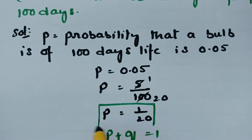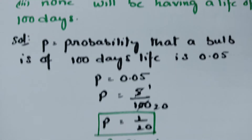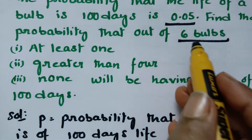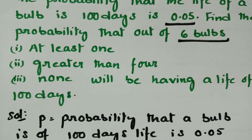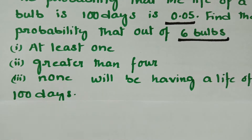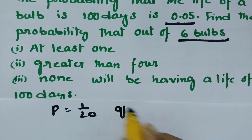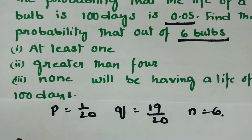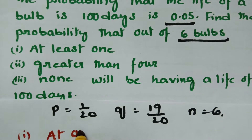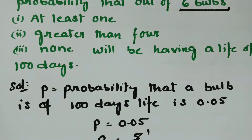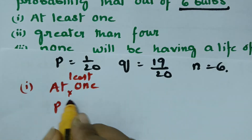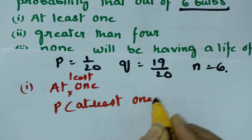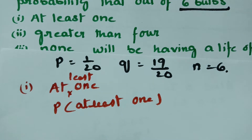So we have P equal to 1 by 20, Q equal to 19 by 20, and N equal to 6. The first solution is to find the probability that at least one bulb will be having a life of 100 days. At least one means the probability of X greater than or equal to 1.